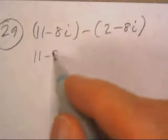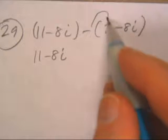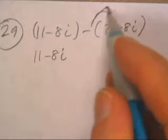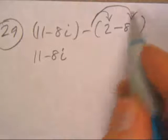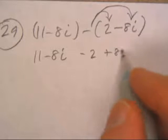Take the parentheses off this first one, nothing changes. But over here you're going to have to distribute this negative sign.